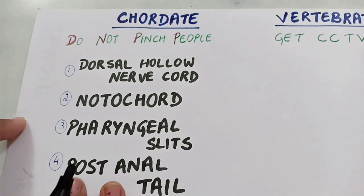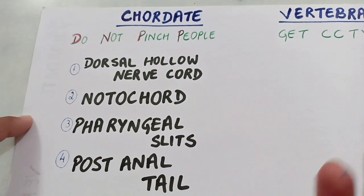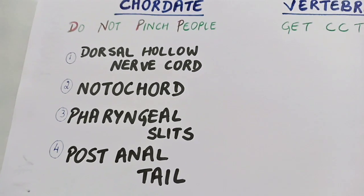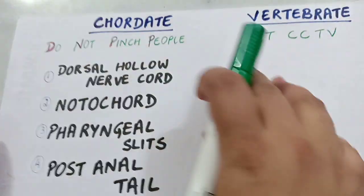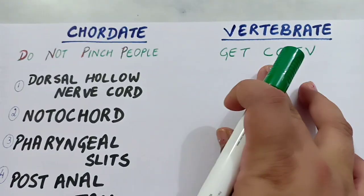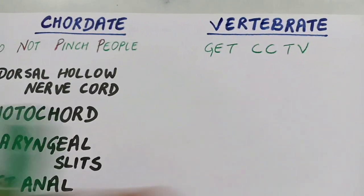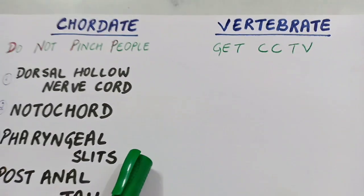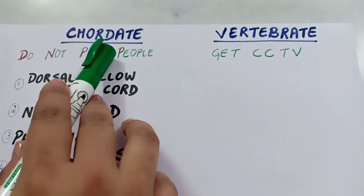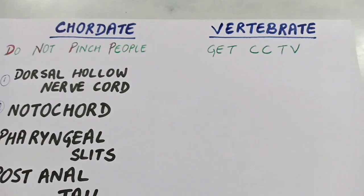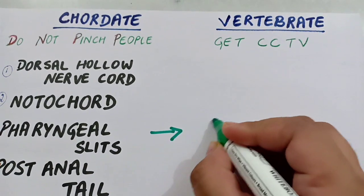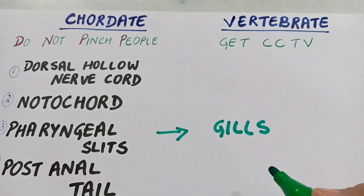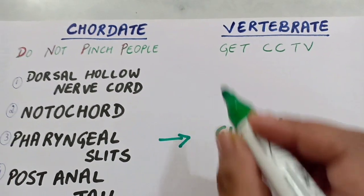From these four features of chordates, we will now derive the four basic features of vertebrates. The shortcut for vertebrates is 'GET CCTV.' The first word 'GET' is for pharyngeal slits — the pharyngeal slits present in chordates get converted either into gills.